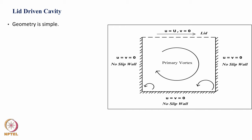If it is 2D it becomes a square cavity; if it is 3D it becomes a 3-dimensional cubic cavity. In this problem the geometry is very simple. Once you have this driving velocity imposed on one side, you have a primary vortex formed at the center and corner vortices formed at the two corners.